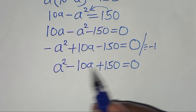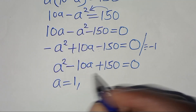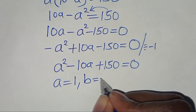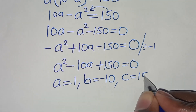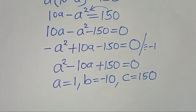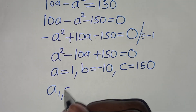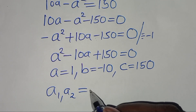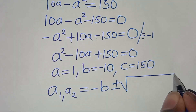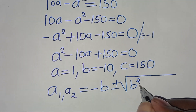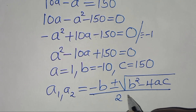From this quadratic equation, we have that a equals 1, b equals minus 10, and c equals 150. To solve for a1 and a2, we apply the quadratic formula: minus b plus or minus the square root of b squared minus 4ac, all divided by 2a.